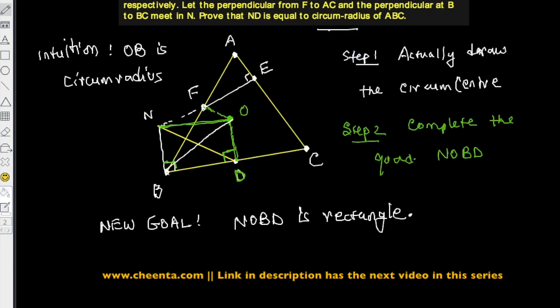Our new goal is to show that NOBD is a rectangle. To do this, if we can show that the points N, O, B, and D are on the same circle — that is, NOBD is cyclic — we would be done, because we already have two 90 degree angles at N and B.